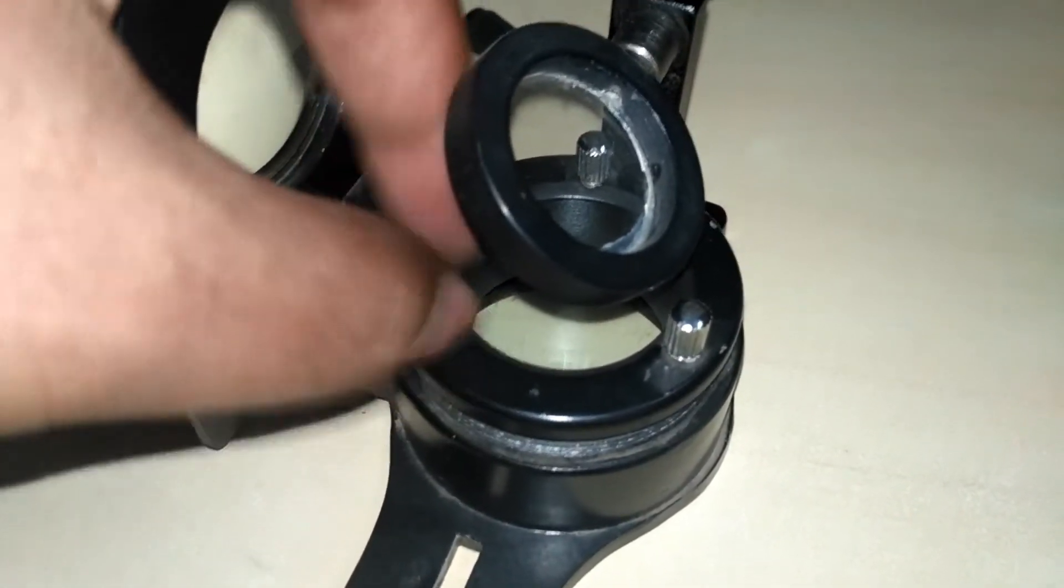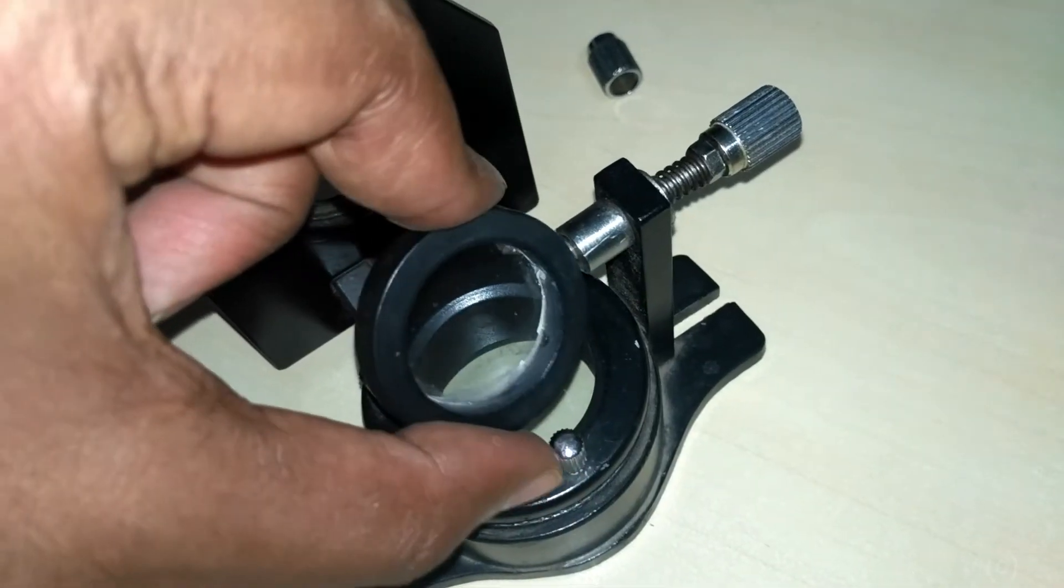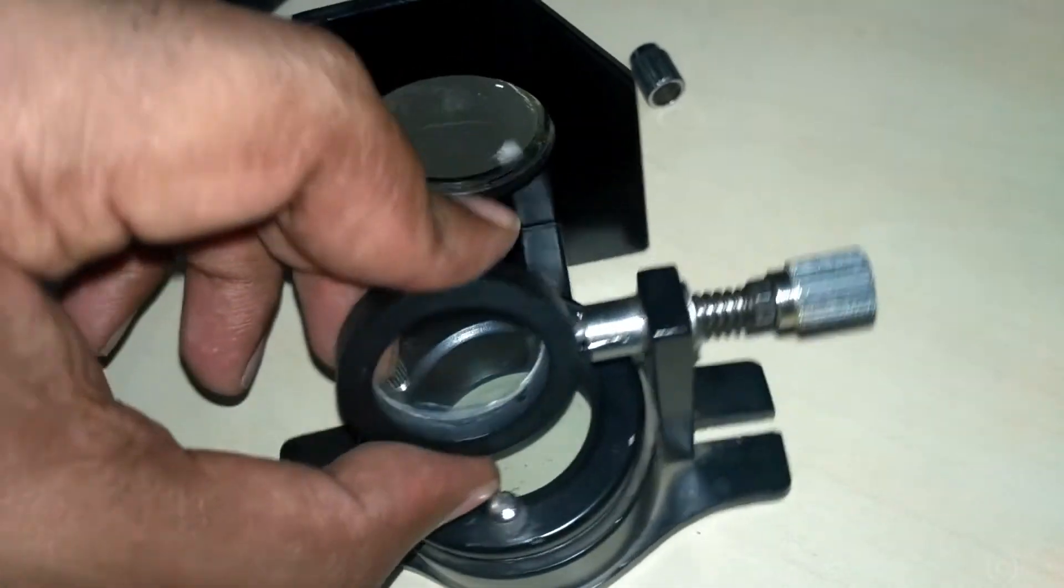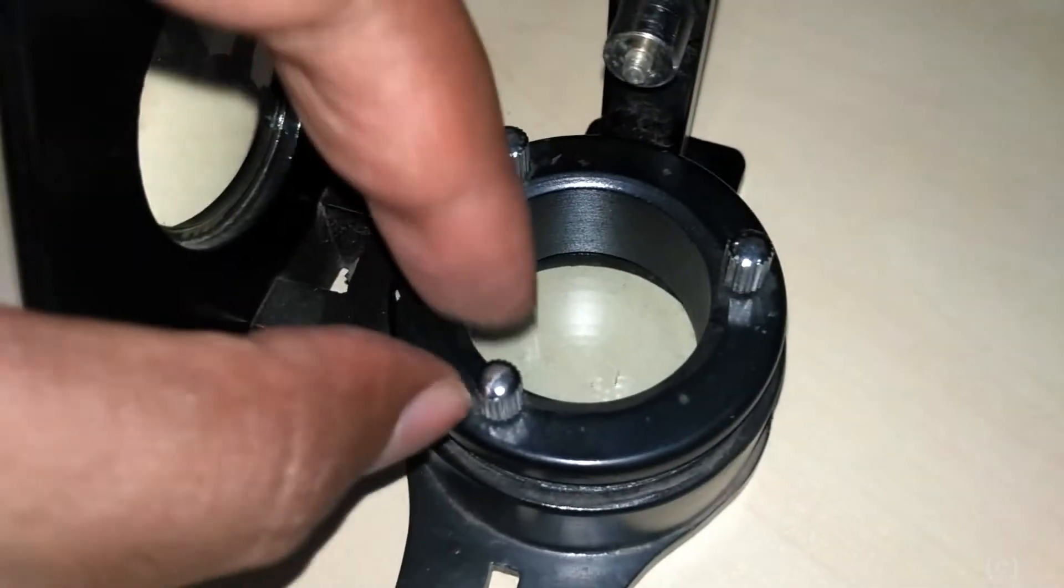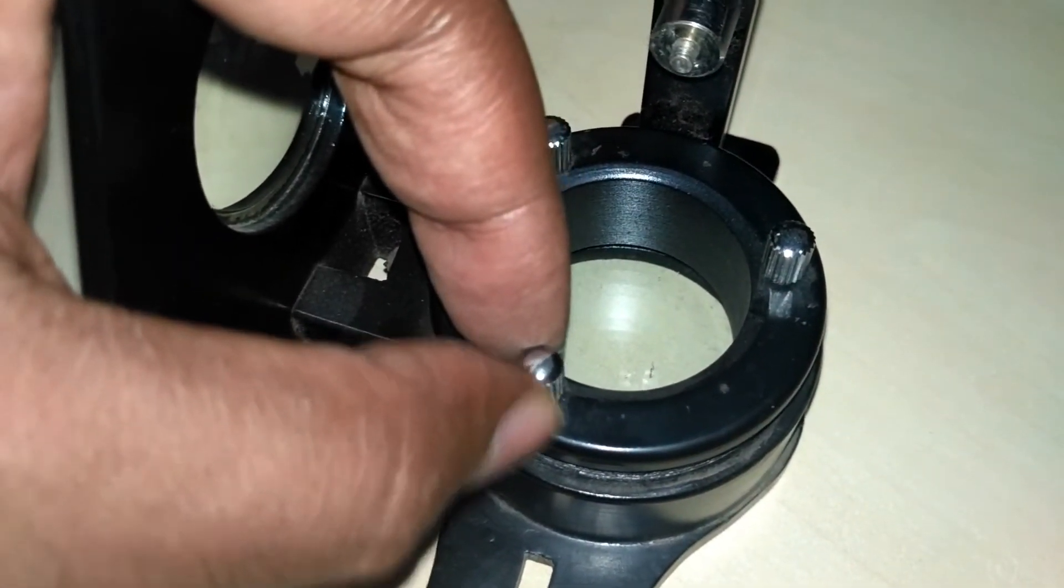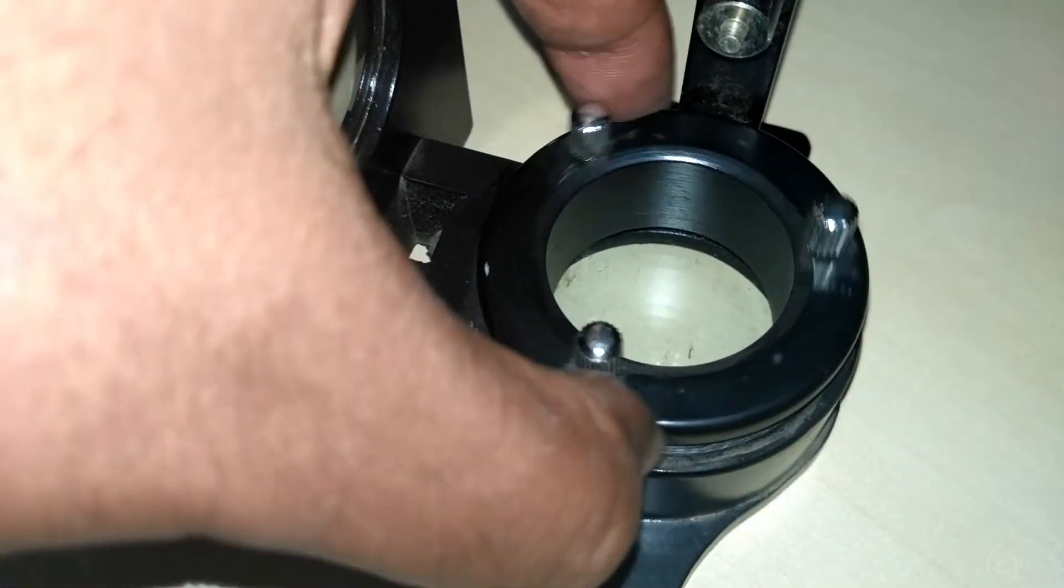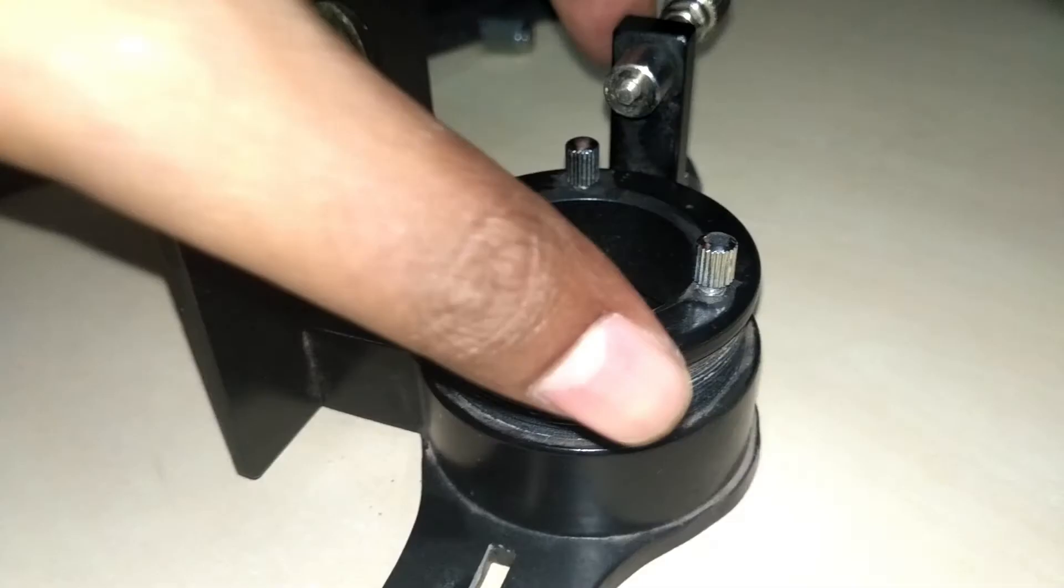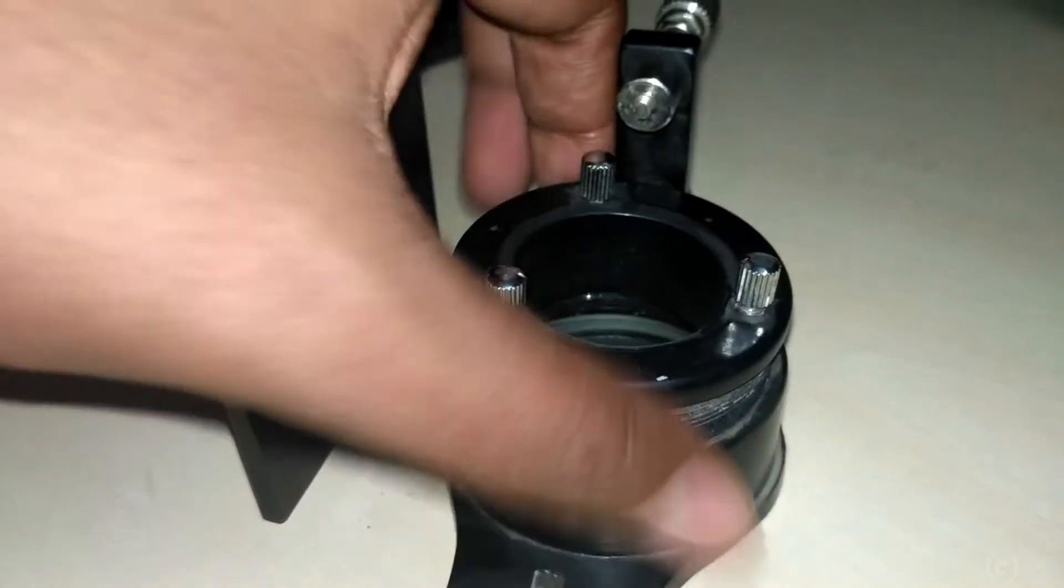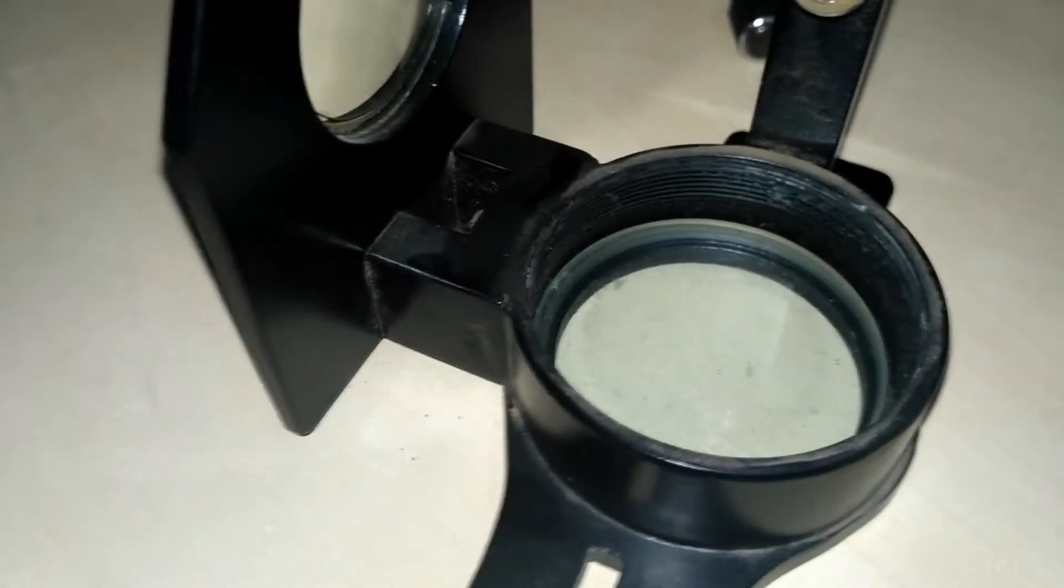If we open this, these screws are used to put pressure on plano convex lens. If you remove this, you will see the plano convex lens and glass plate.